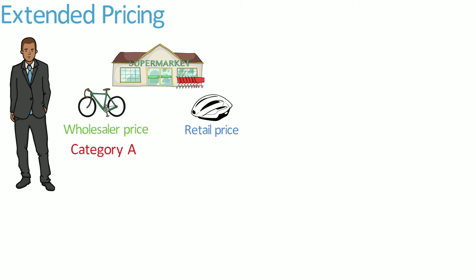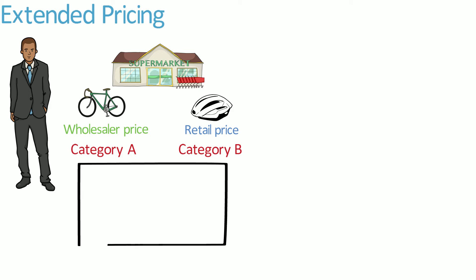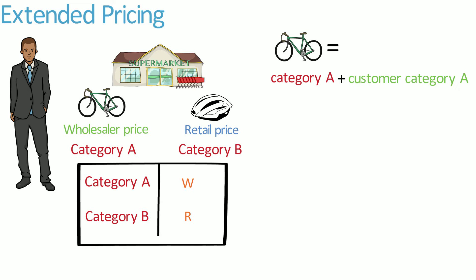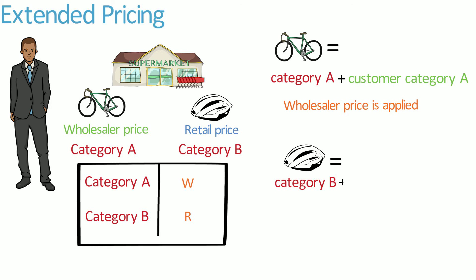For the bikes, he defines them as category A against the stock items, and for the accessories he defines them as category B. Then, against the wholesaler account, he defines any stock category A to use the price list W, and any stock category B to use the price list R. For example, a bike will form part of category A and the customer category A, which means that the W price is applied, whereas helmets will form part of category B and the customer category B, so an R price is applied.